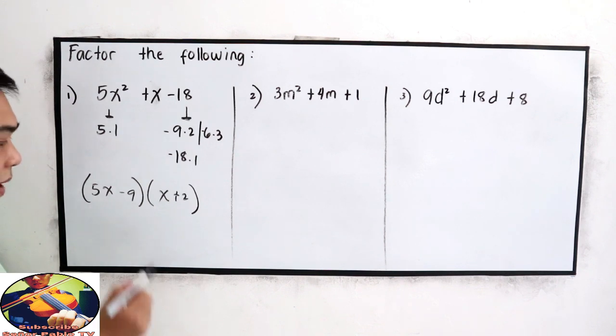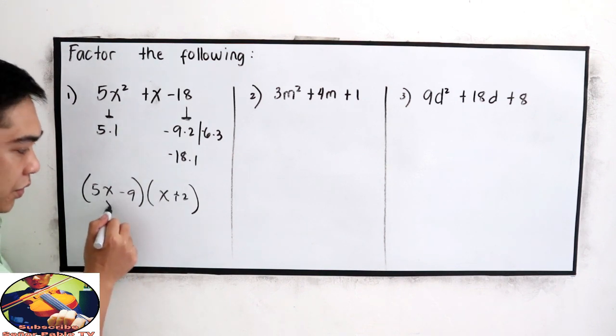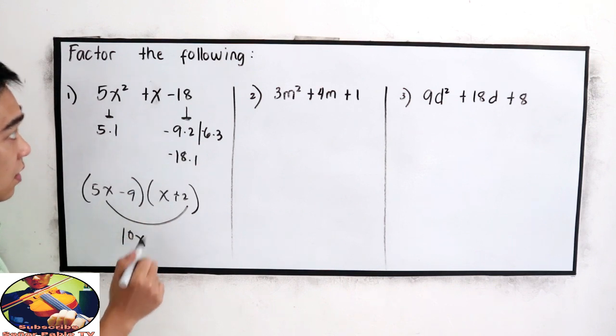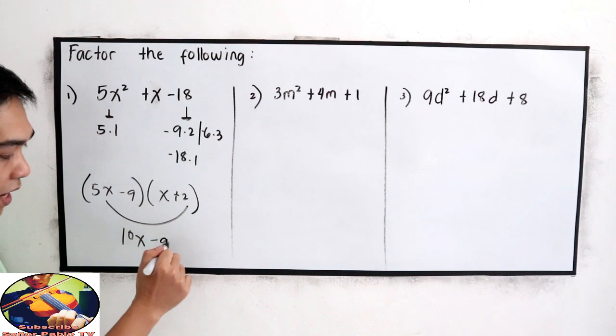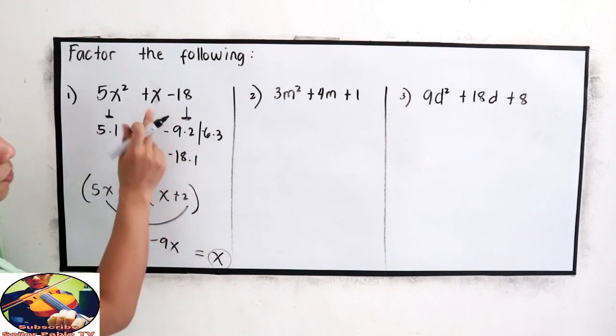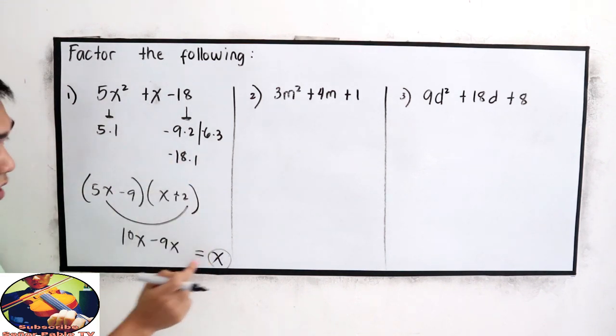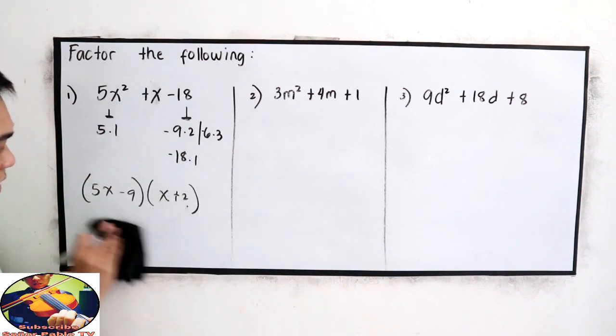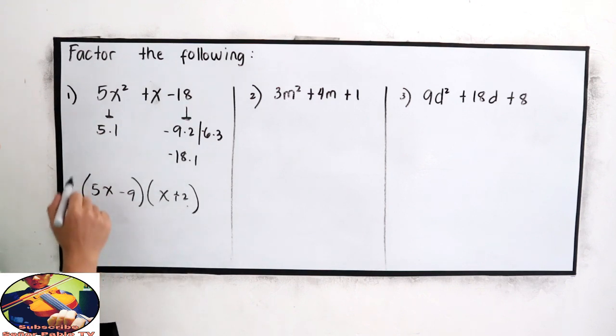Now let's use the FOIL method, outer to outer, so that will become 5x times 2, then negative 9 times x, negative 9x. Get the sum, this is x. Is x equal to our middle term? Yes, it is. So that means this is now our factored form, 5x minus 9 and x plus 2.